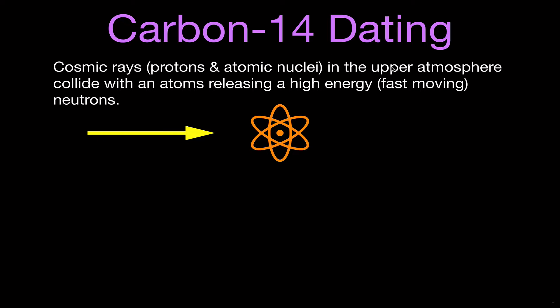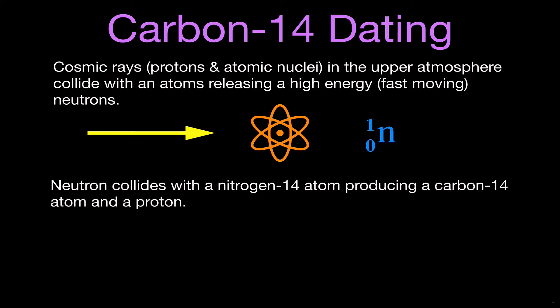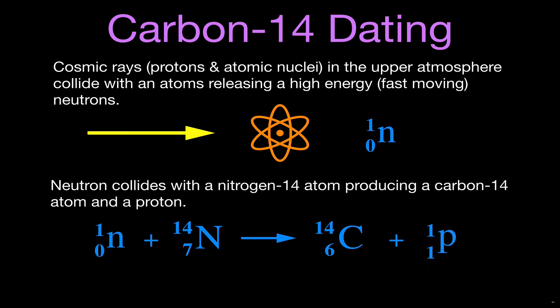These high-energy particles will come into Earth's upper atmosphere and collide with other atoms, releasing other particles — one of which could be a high-energy neutron. That's the symbol for a neutron: N for neutron, one mass number, and zero for the charge. The high-energy neutron then collides with a nitrogen-14 atom in the upper atmosphere. When that neutron is absorbed into the nucleus, it produces a carbon-14 atom and a proton.